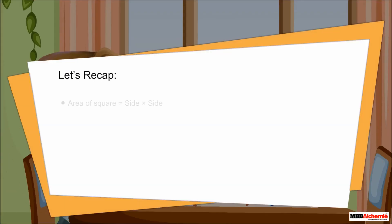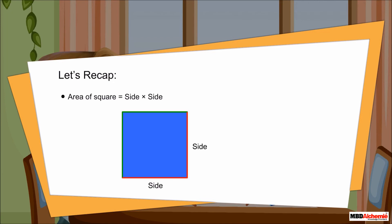Let's recap. The area of square is equal to side into side.